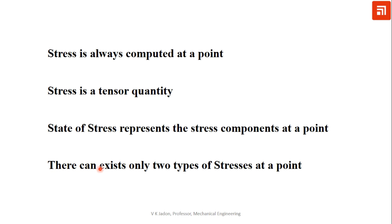There can exist only two types of stress at a point: normal stress and shear stress. Different names such as bending stress, longitudinal stress, axial stress, twisting stress, torsion stress, transverse shear stress, and transverse normal stress exist — but each named stress can be classified either as a shear stress or as a normal stress.